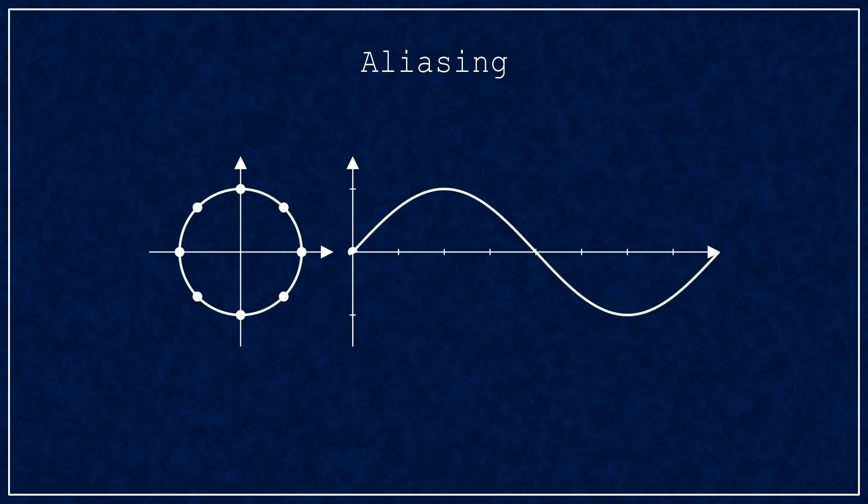Before we jump into the details of control, we need to deal with aliasing. Here's a sine wave and its unit circle representation. Watch how we hit the sample points as we sweep around the curve. You can think of them as checkpoints.